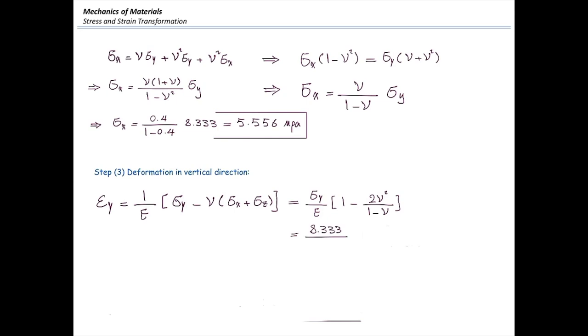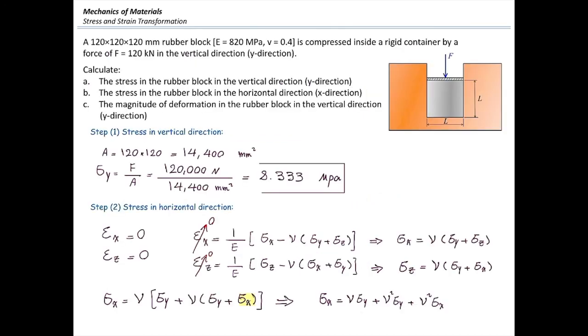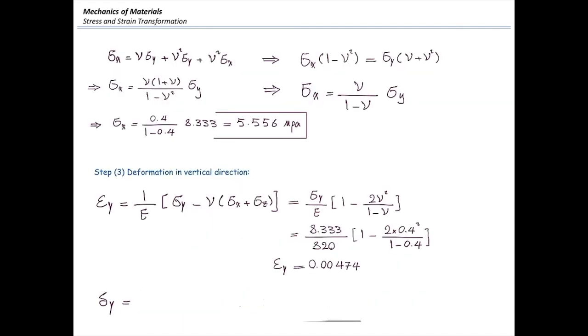All right. Now let's plug in the numbers and that would give us 0.00474 epsilon. And if we want to determine how much is the deformation in that direction, we can add the original element. The height of that block is L, which is 120. So I need to multiply strain in the y direction by the height of that block or L. And that would give us 0.569 millimeter.